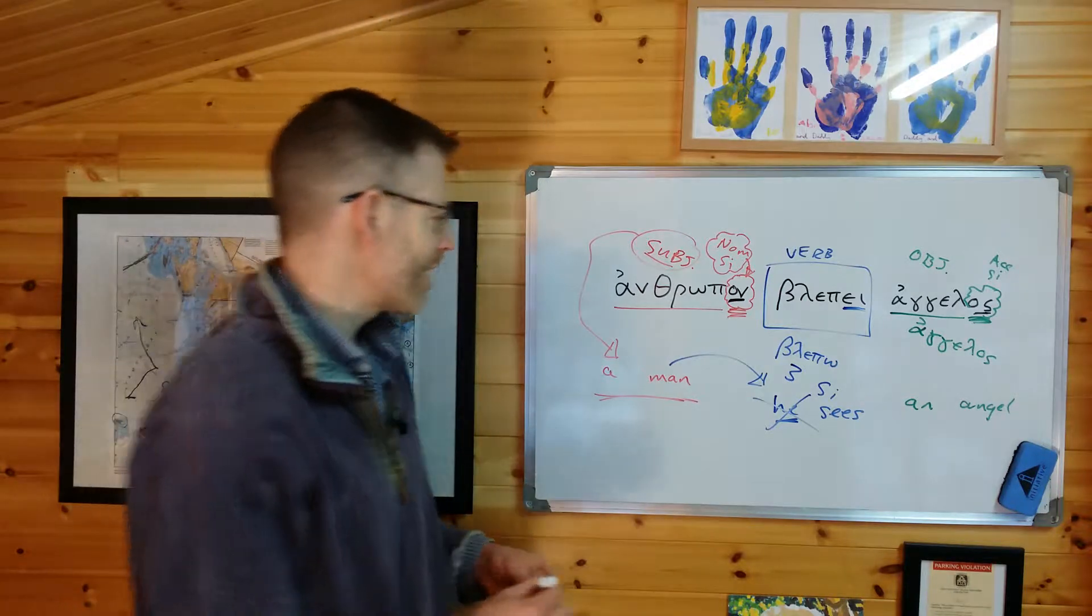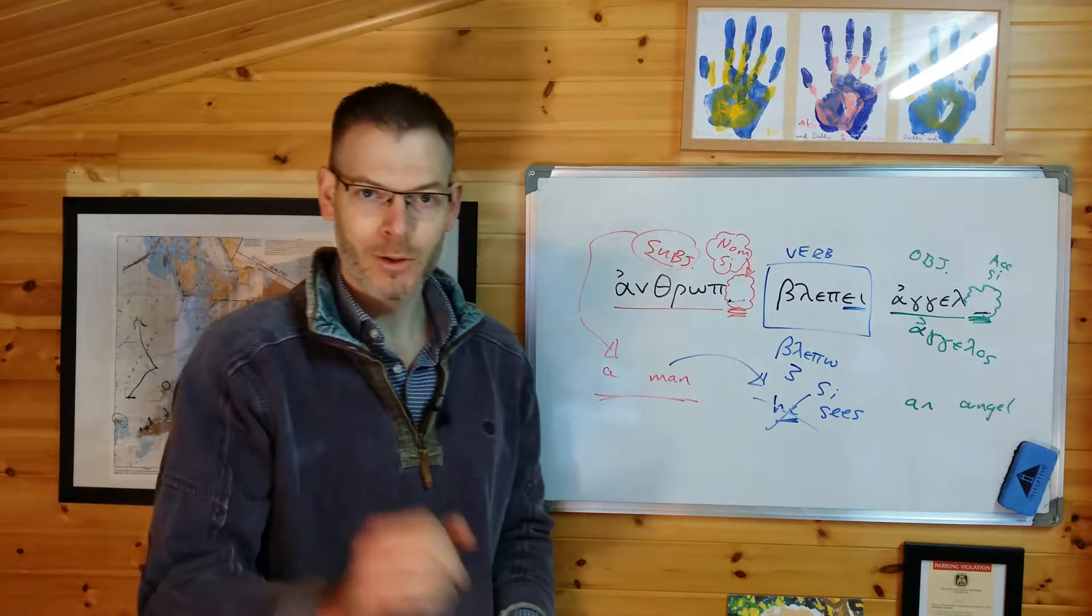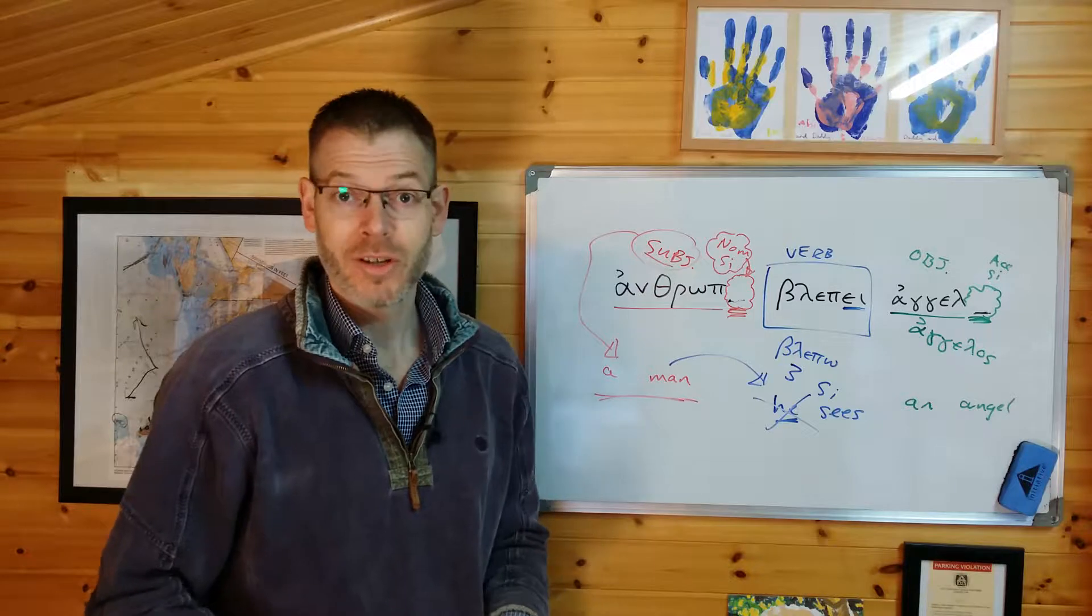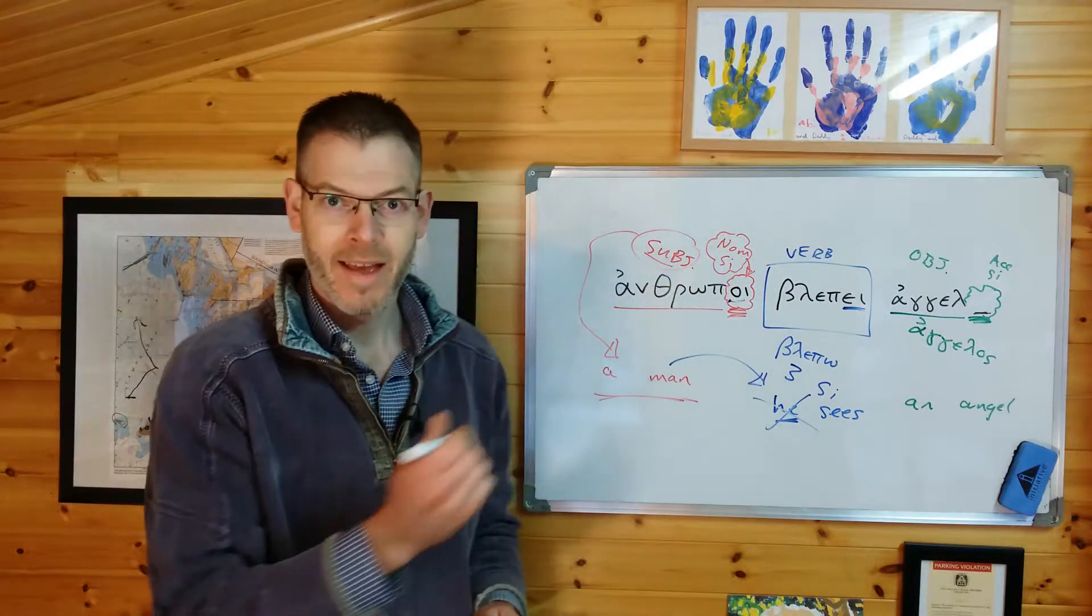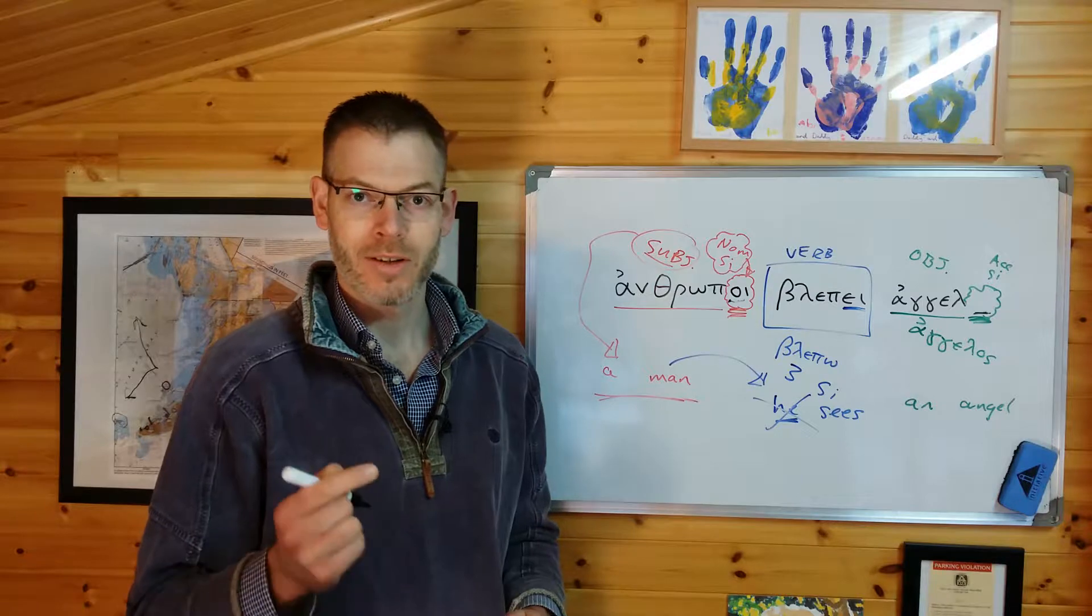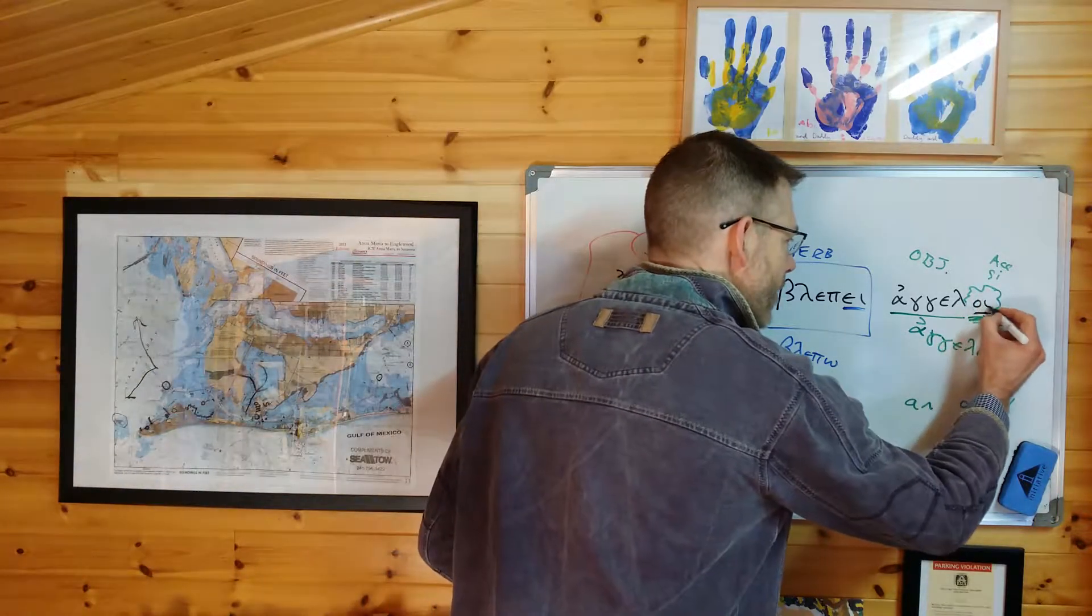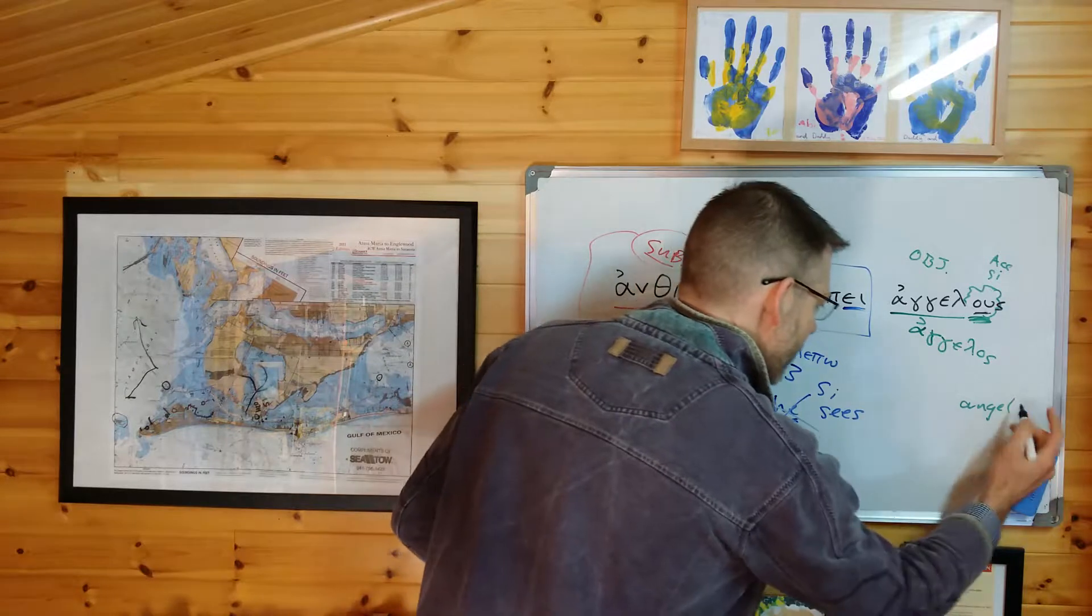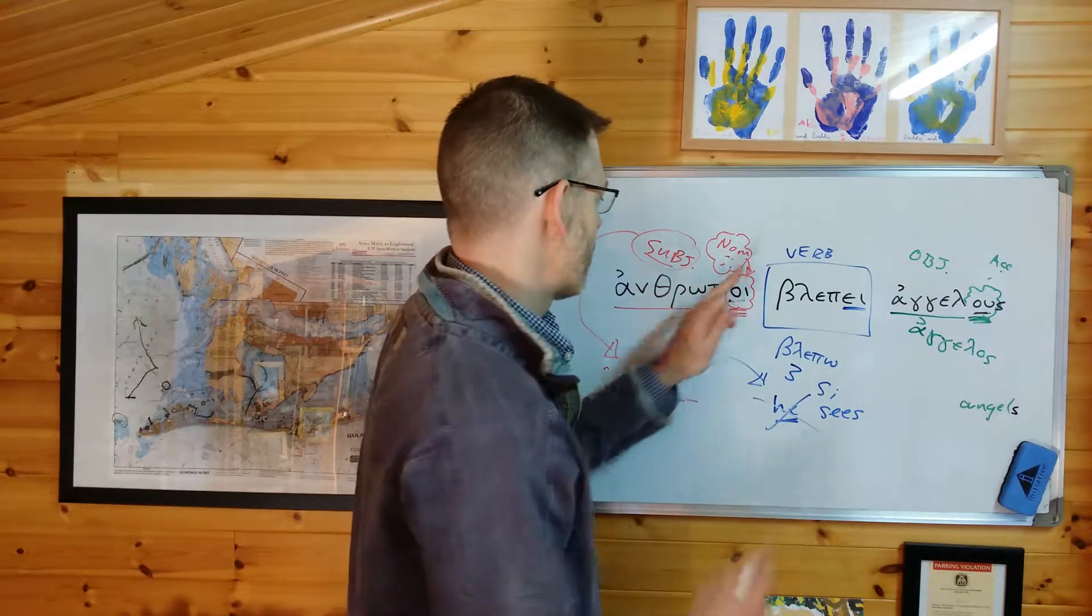Now, suppose we want to go one better, and instead of saying that, what we want to do is to say, men, plural, see angels. This is where it's going to get clever. Men see angels. Well, if it's men, and that's the subject of the verb, we're going to have to have the oi ending. The oi ending. You can see that in the table. The nominative plural ending is oi. Logos, logon, logoi. And the accusative plural ending is us. That now says, men, and this says, angels. And this is the subject, nominative plural. This is the object, accusative plural.